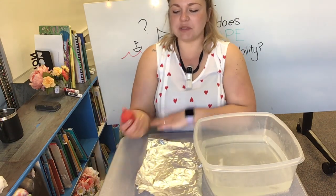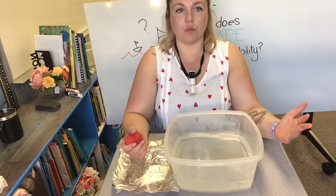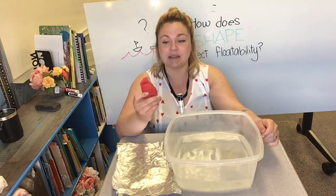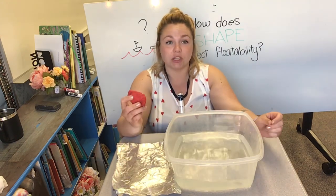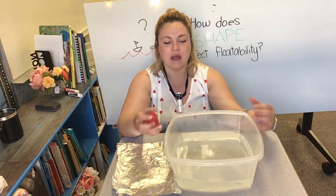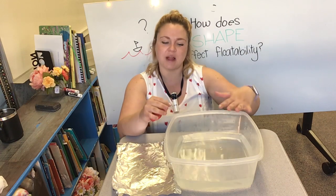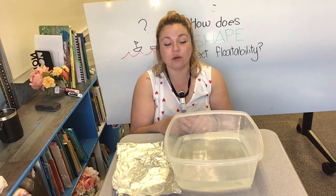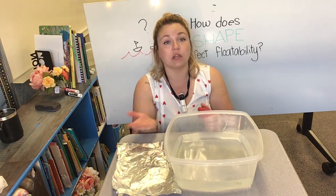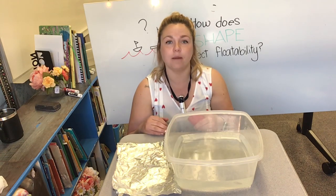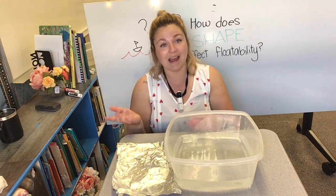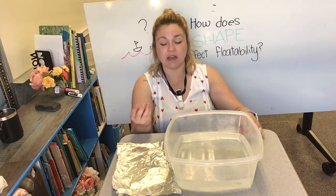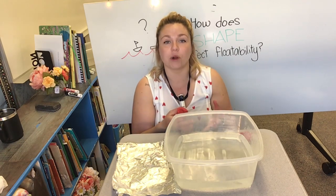I want you to make a prediction about which shape will be the best for floating. If I were to make a little boat out of this clay, what shape should I make it into? Would it be best if it was big and thick? Would it be best if it was flat? What sort of shape should I put this clay into to make it float the best — and not only float, but be able to hold a load, since boats normally have things on them and need to hold weight and float at the same time. Experiment with your clay or play-doh by putting it into the shapes you think will work the best.